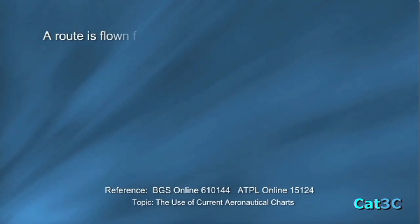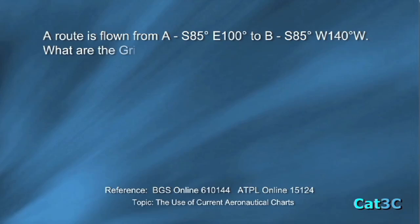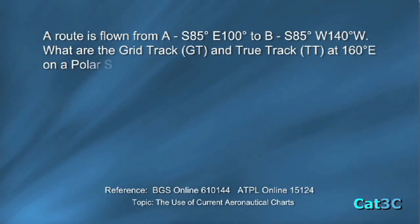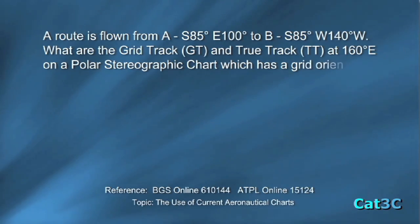A route is flown from A at south 85 degrees east 100 degrees to B south 85 degrees west 140 degrees. What are the grid track and true track at 160 degrees east on a polar stereographic chart which has a grid orientated on the 180 degree meridian?